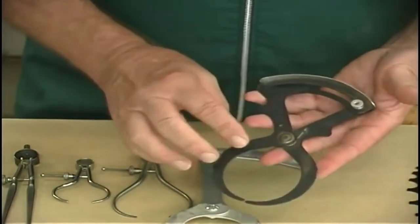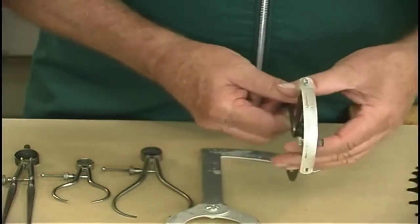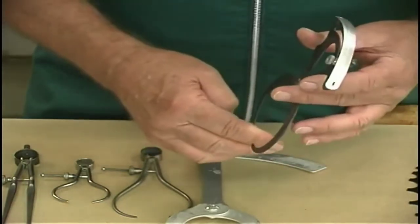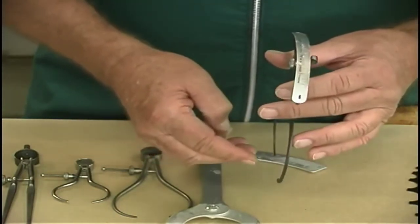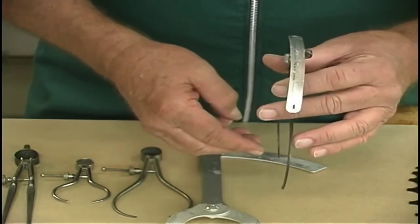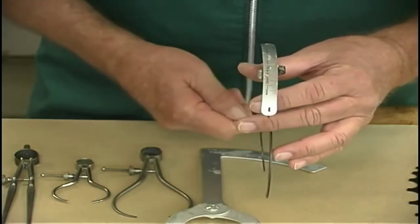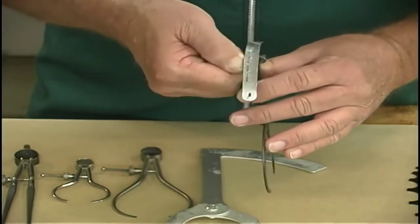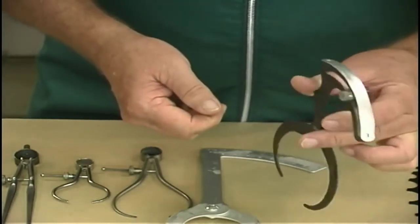Here is another direct reading caliper. It will actually give you what size you're checking as you're doing it. In other words, you could put this on and say three inches, make your cut and when it gets to two it's good or you could set it at two, lock it and use it like a conventional caliper.